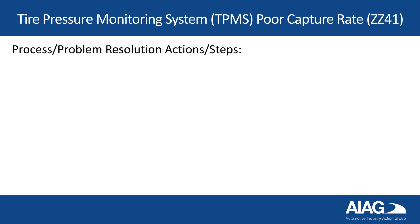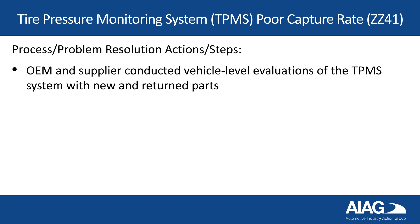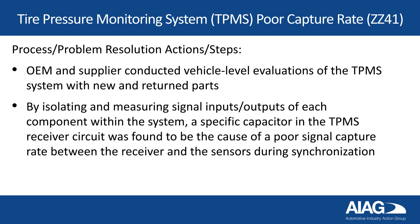The OEM and supplier conducted vehicle-level evaluations of the complete TPMS system with both new and returned parts. By isolating and measuring signal inputs and outputs of each component within the system, a specific capacitor in the TPMS receiver circuit was found to be the cause of a poor signal capture rate between the receiver and the sensors during synchronization.